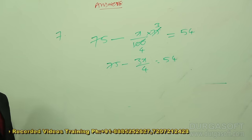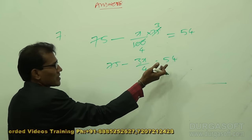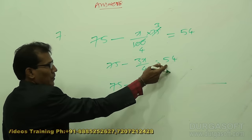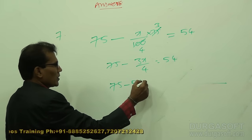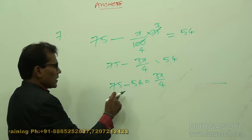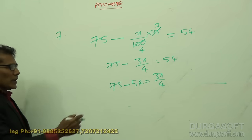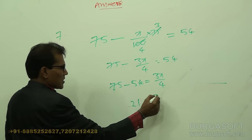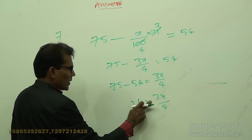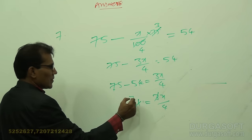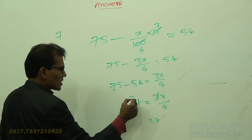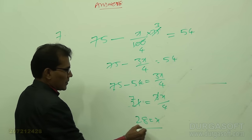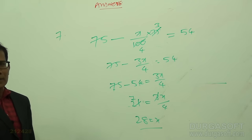Now collect terms: 75 minus 54 equals 3x/4, which gives 21 equals 3x/4. Cancelling 3, we get x equals 4 times 7, which is 28. So the answer to question number 7 is x equals 28.